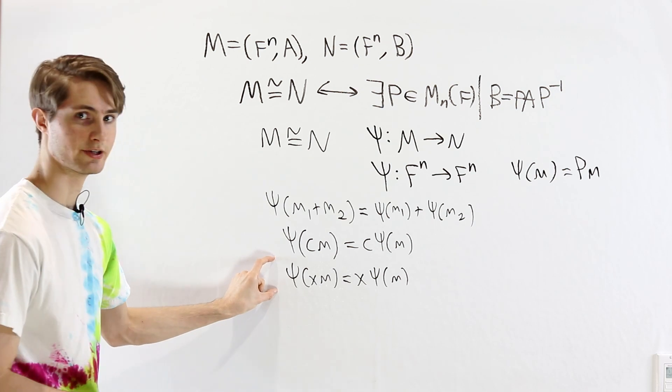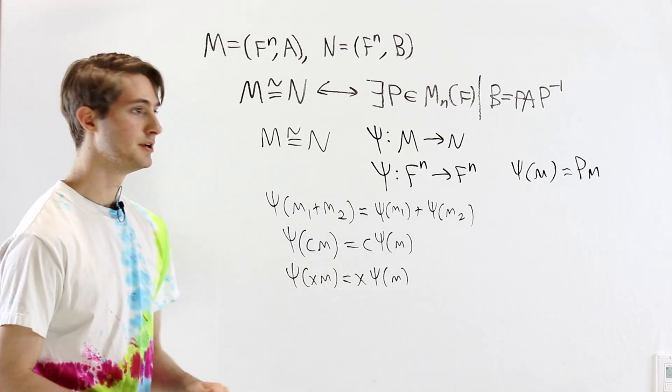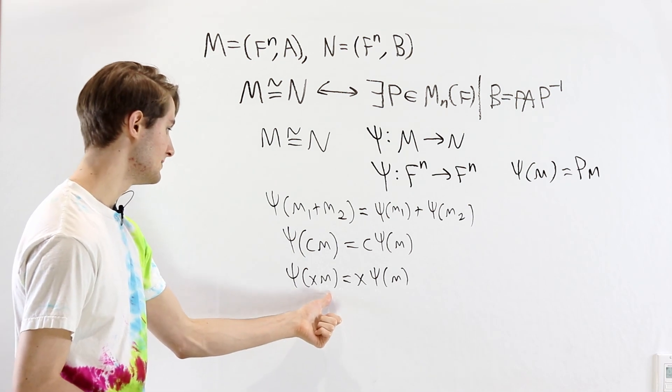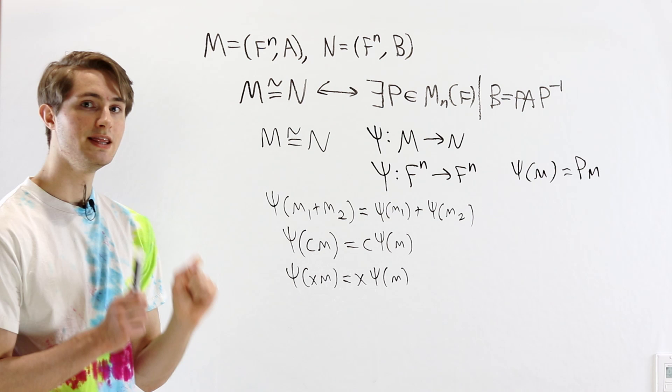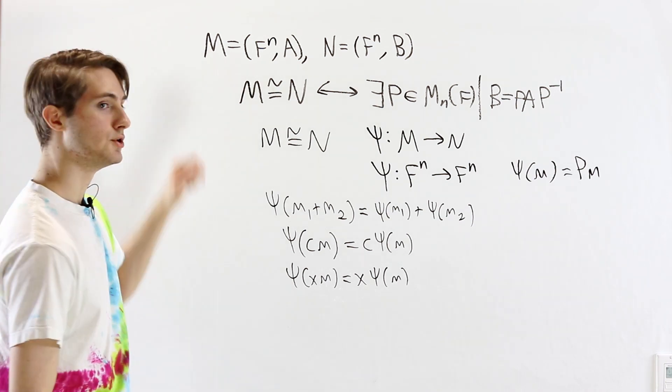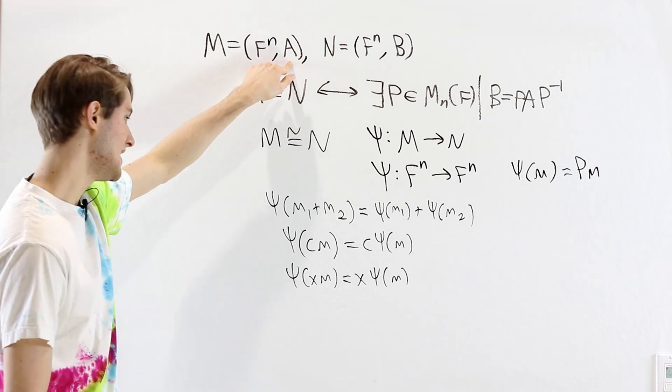And after that, we have this final condition. Now, in order to understand what this means, we need to rewrite this x times m in terms of the matrices. We know that in the module M, multiplication by x is the same as multiplication by the matrix A.